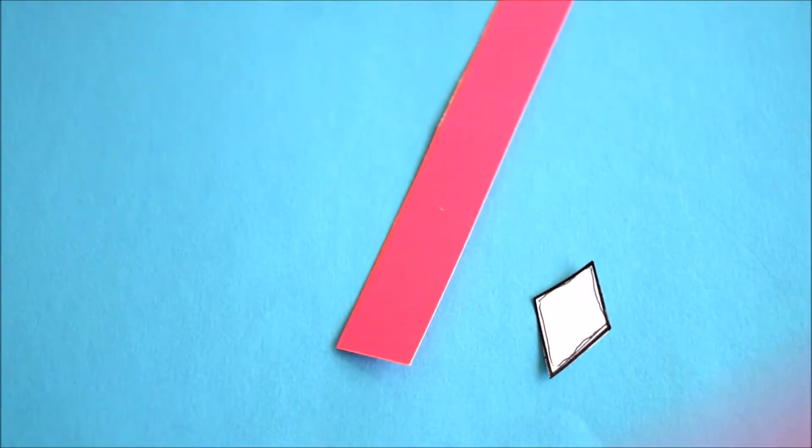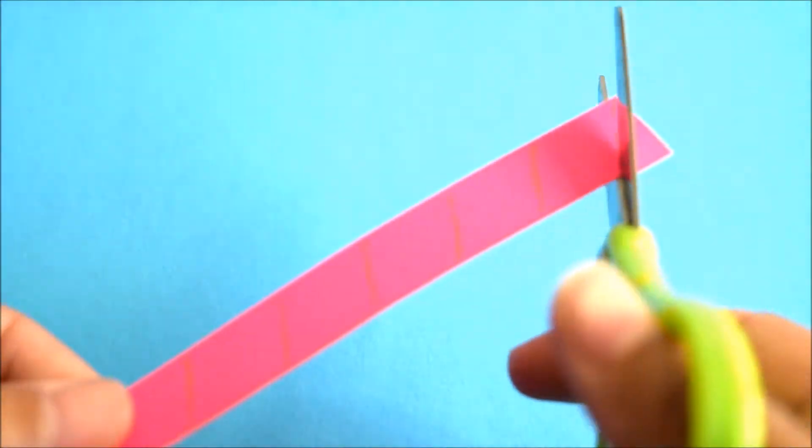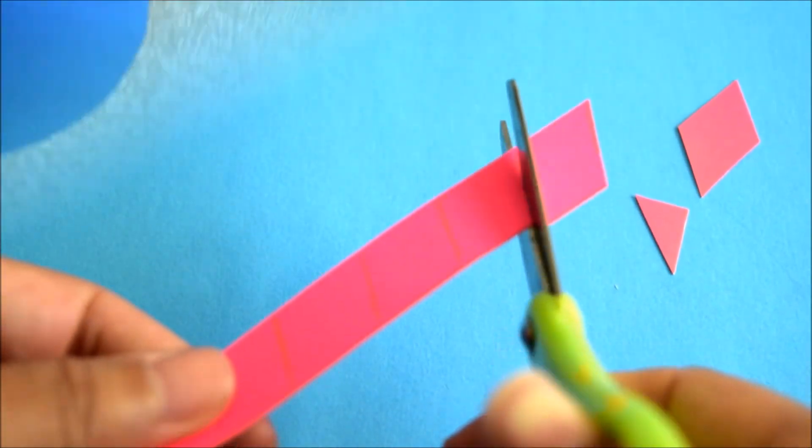The next one is going to be a diamond shape and this is super easy. You just cut out a strip and make diagonal lines and then cut it out.